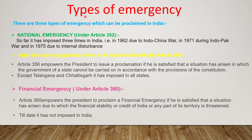You should also know about the types of emergency for long questions — these topics should be known by all citizens of India. There are three types of emergency which can be proclaimed in India. The first is national emergency under Article 352. So far, it has been imposed three times in India — in 1962 due to the Indo-China War, in 1971 during the Indo-Pakistan War, and in 1975 due to internal disturbance.